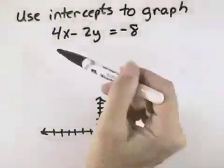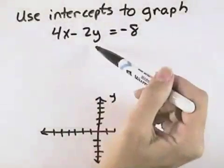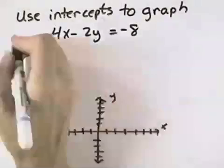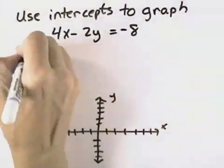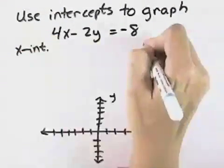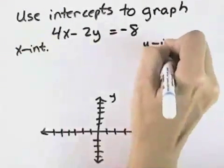We want to use intercepts to graph 4x minus 2y equals negative 8. So we need to find the x-intercept and we also need to find the y-intercept.